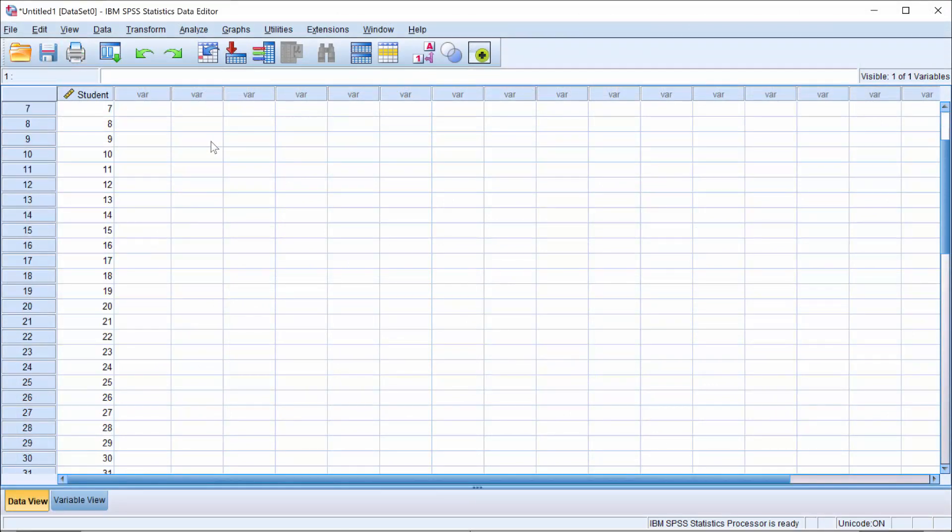This is an SPSS data window. And what I did was create a variable called student. And I listed 35 students because in the example we've been talking about, we've got 35 students and we want to randomly select five of them.